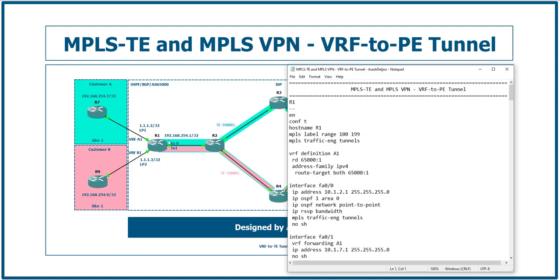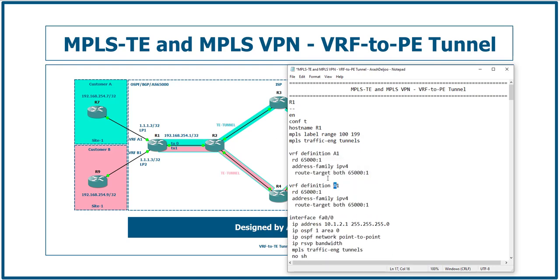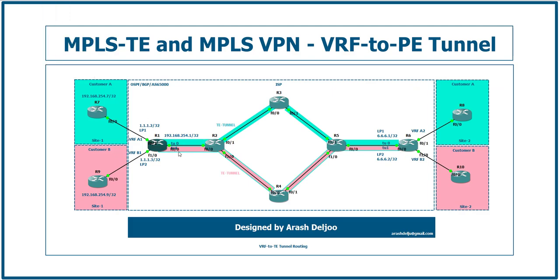This is our notepad file. Let's start configuration on Router 1. For the initial configuration there is no change. I configured two VRFs: vrf definition A1, and now vrf definition B1. The RD of VRF B1 is 65000:2, with address-family IPv4 and route-target import/export 65000:2. This covers the MPLS Layer 3 VPN configuration. Now let me show you the interface labels — here we have interface FastEthernet 0/0.